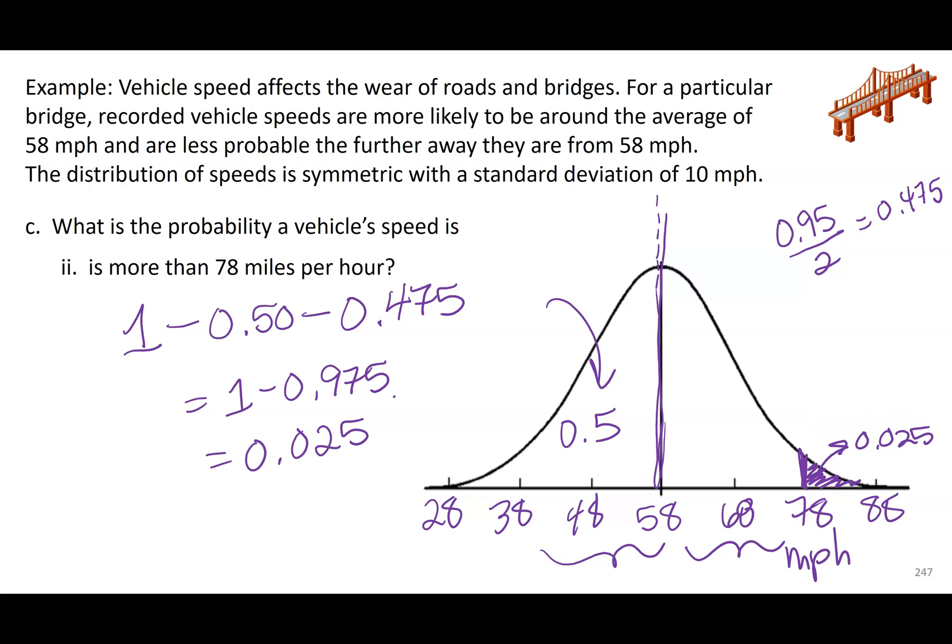So, if I were to randomly select a car driving across this bridge, about two and a half percent of the time, I'm going to pick a car that's going more than 78 miles per hour. So, this wedge right here. And I just like to have things labeled, it's easier for me. If you were to add these three wedges, so this is the first, this is the second, this is the third, you should get to one. If you ever add up all the wedges and they don't add to one, something went wrong.